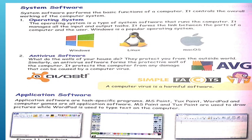Antivirus software protects the computer from any damage that can be caused by a computer virus. It is a safe area where we stay protected. We install antivirus software so that we can protect the computer from viruses. Examples of antivirus software include AVG, Kaspersky, and QuickHeal. These are popular antivirus programs, and each antivirus software has different features.